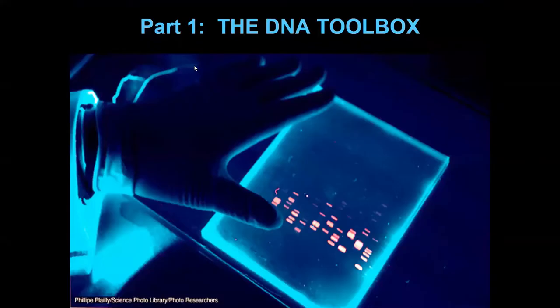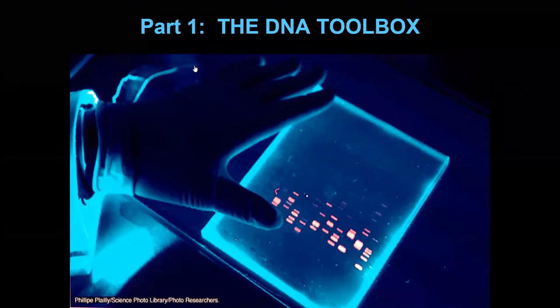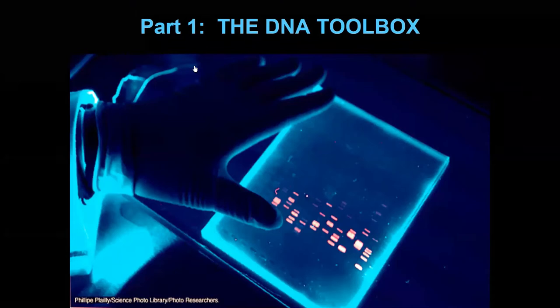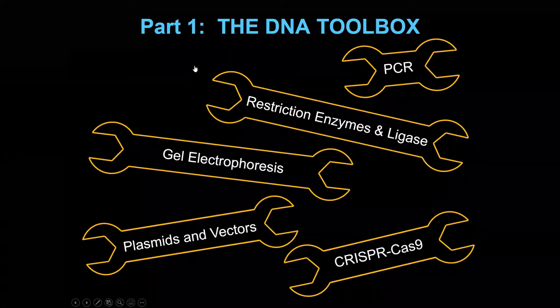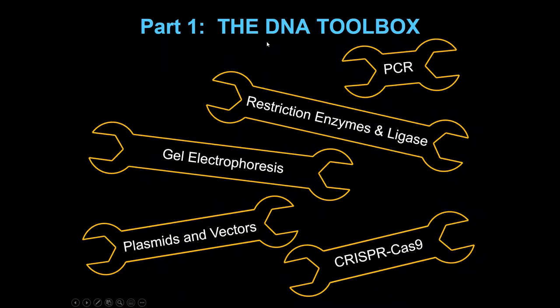First I want to talk about the DNA toolbox — techniques that are really handy and being used all over the place in molecular biology labs. These include things we've talked about already: PCR, enzymes, gel electrophoresis (which we did in the lab), plasmids, and something called CRISPR-Cas9, which has been getting a lot of press over the last few years.